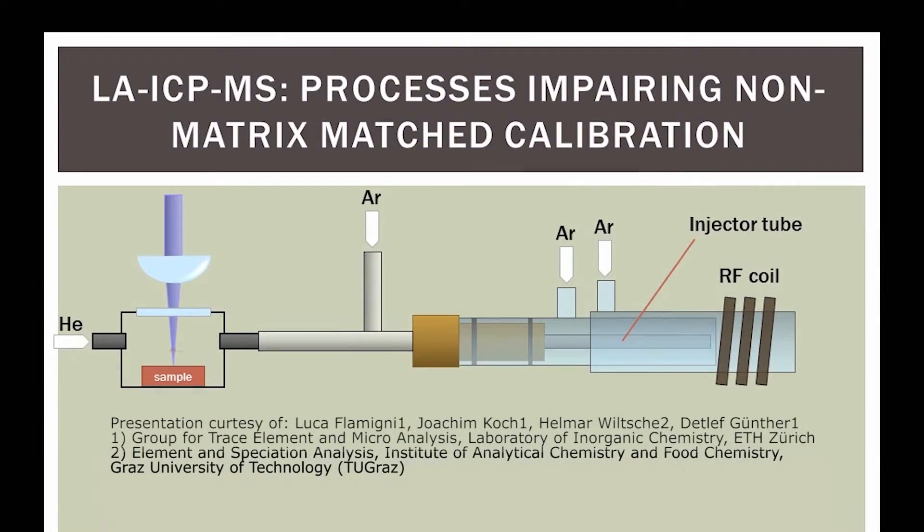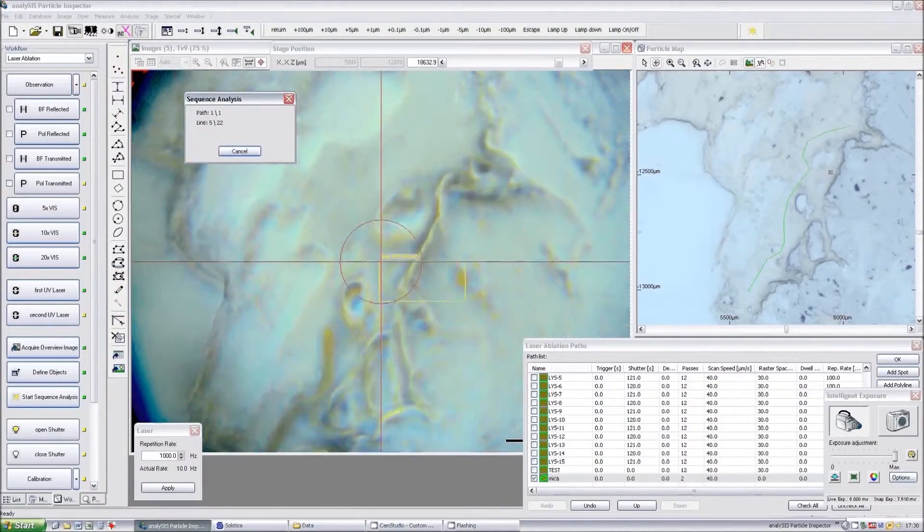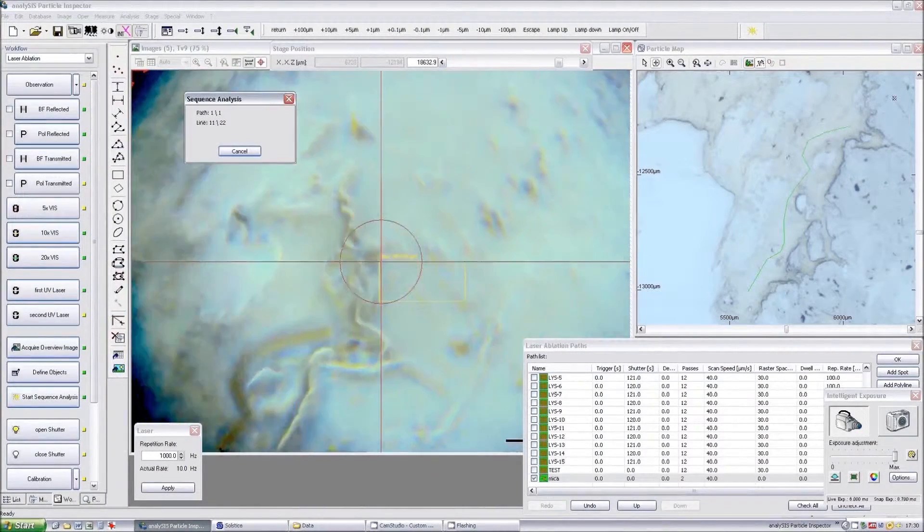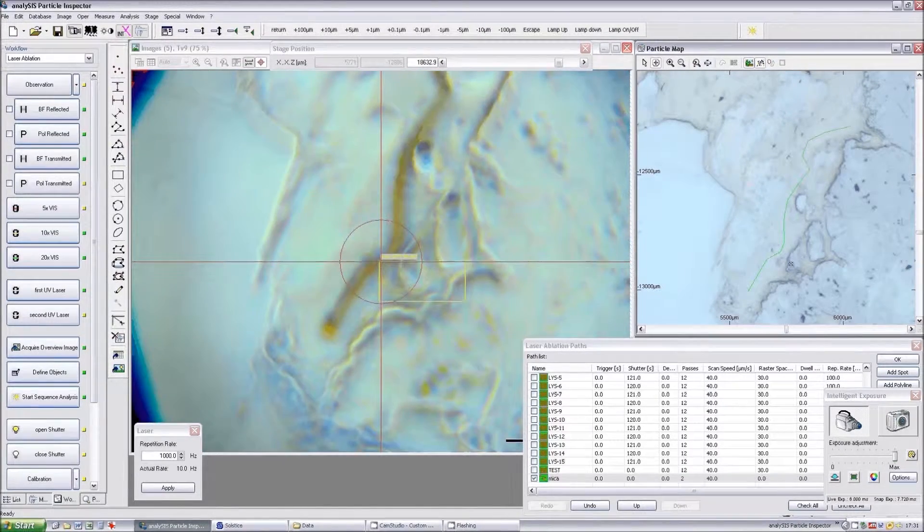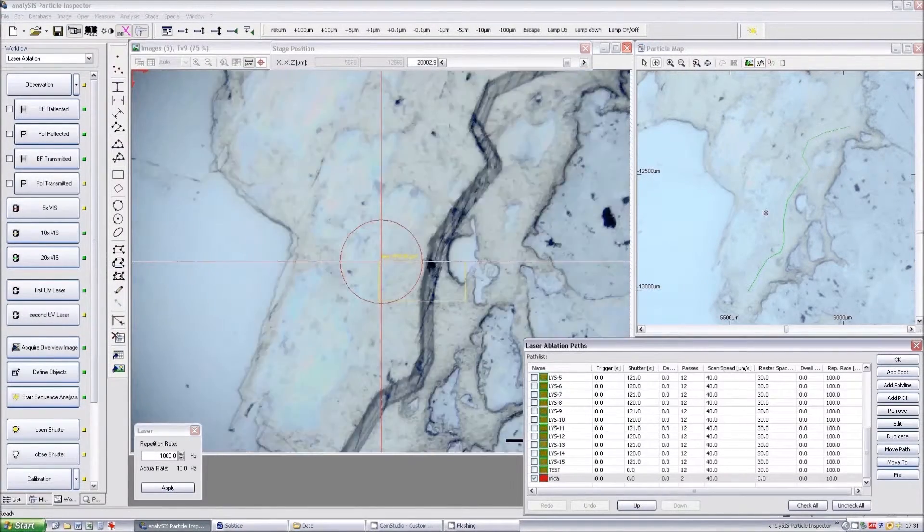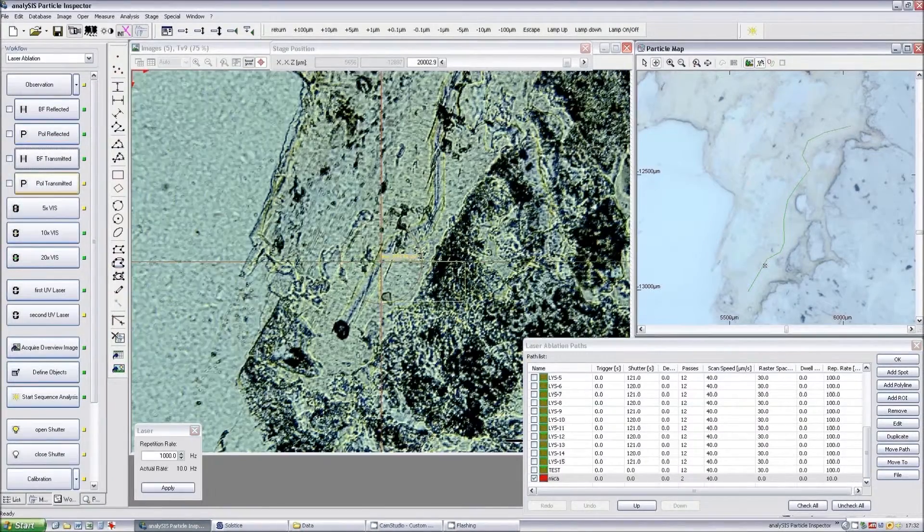In laser ablation, an ultra-short pulsed high-energy laser beam hits the sample surface, removing a small portion of my sample. For my analysis, I typically need 100 by 100 micrometer large sample and around a few hundred nanometers of depth.